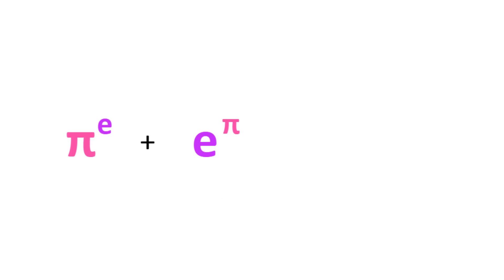There's also pi to the e. If you add it to e to the pi, it's very close to 45.6, but it's not an integer, so it's less cool. All of these so far involve exponents, but what about simple addition?